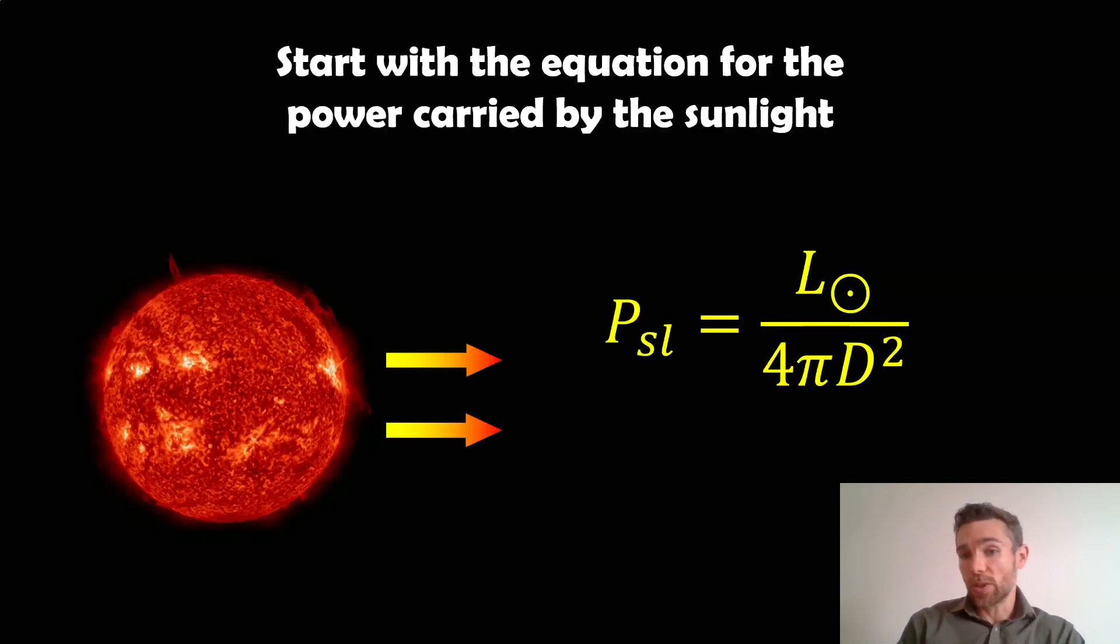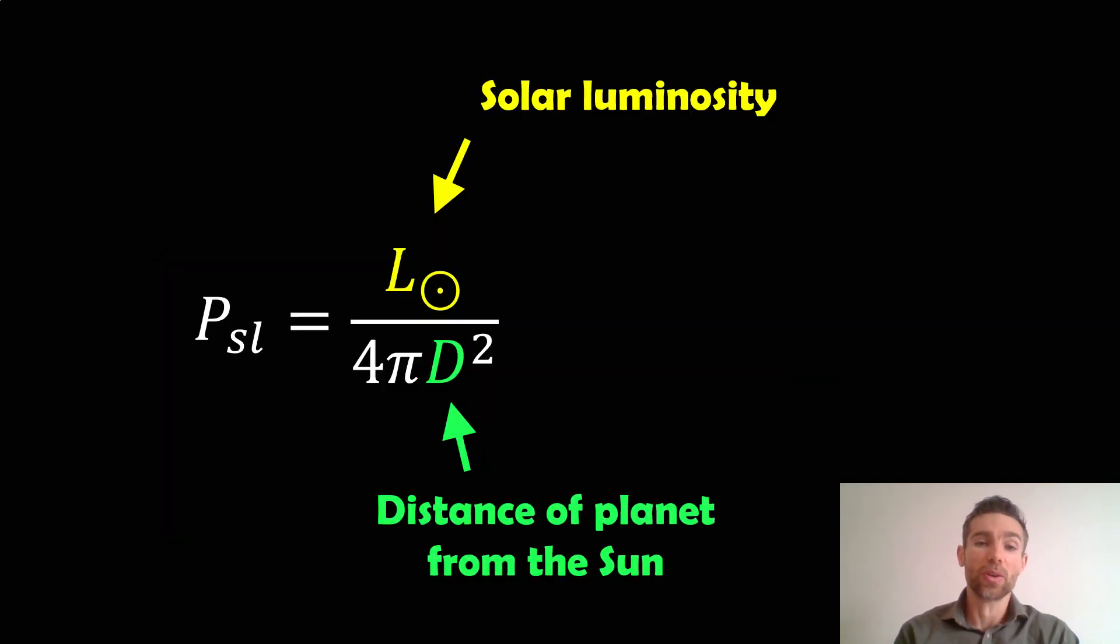So what are we going to start with? The first thing we need is the power carried by the sunlight or the starlight. If we're using Earth as an example or the solar system, we'll refer to it as sunlight, but it could just be the stellar light. This is given as a function of the luminosity of the Sun and the distance of the planet from the Sun. The symbol L with the circle and dot basically means it's a solar unit. If you had R with the circle and dot, that means solar radius.